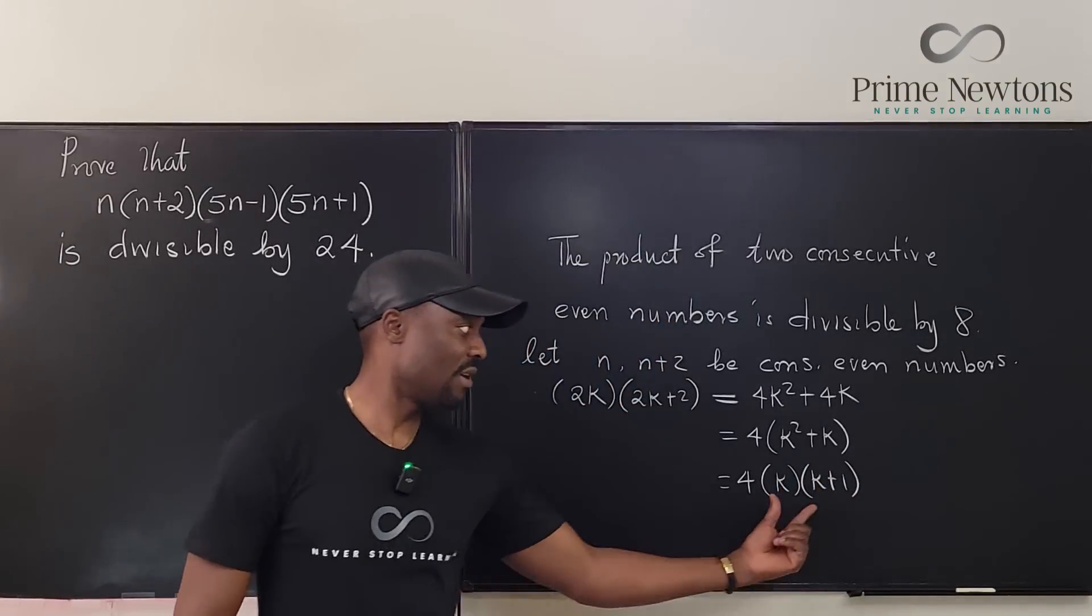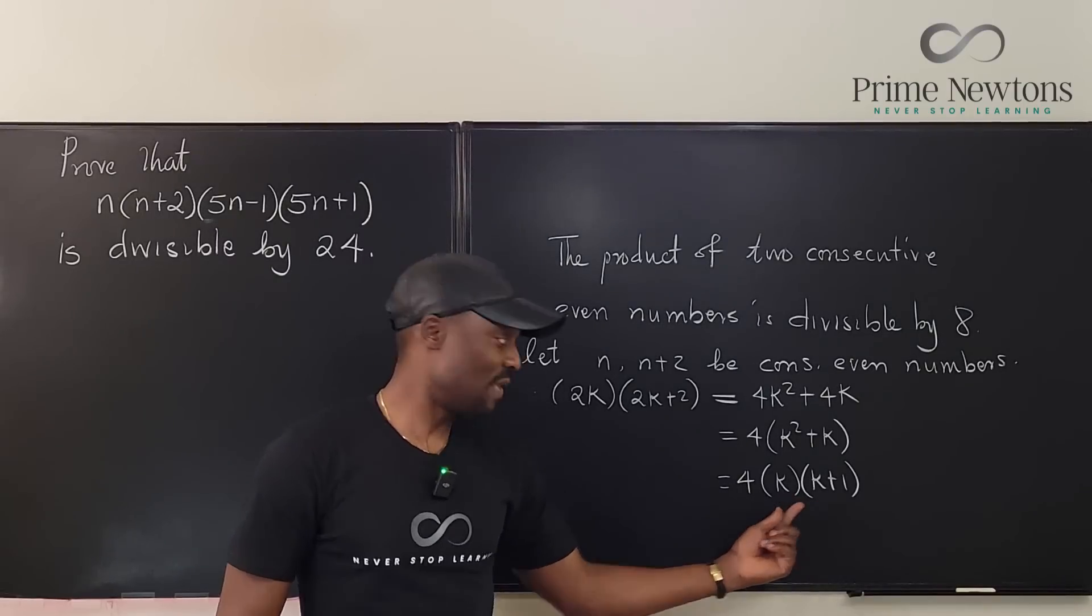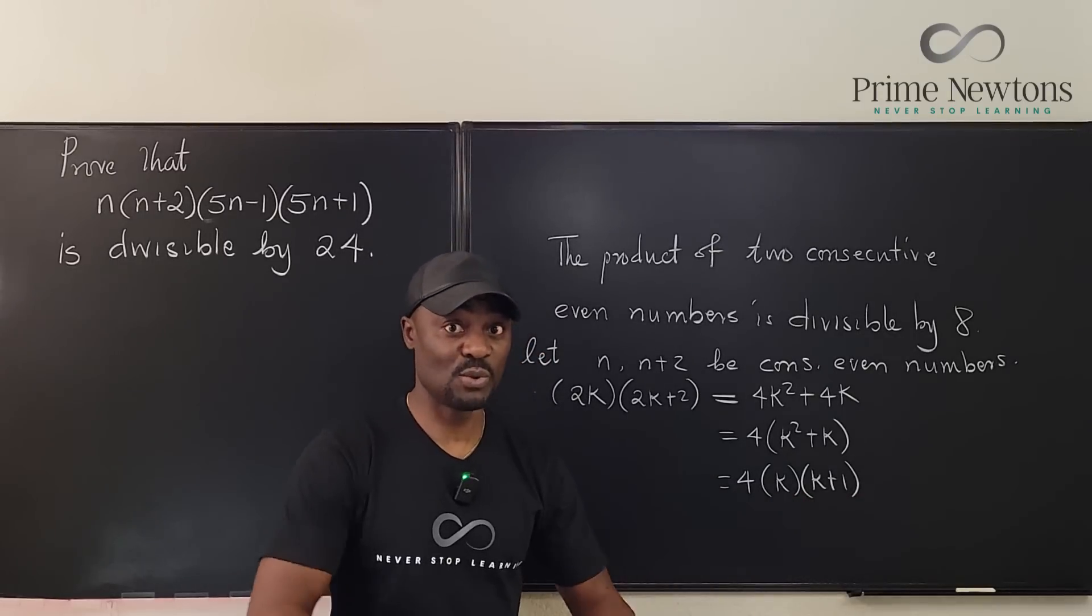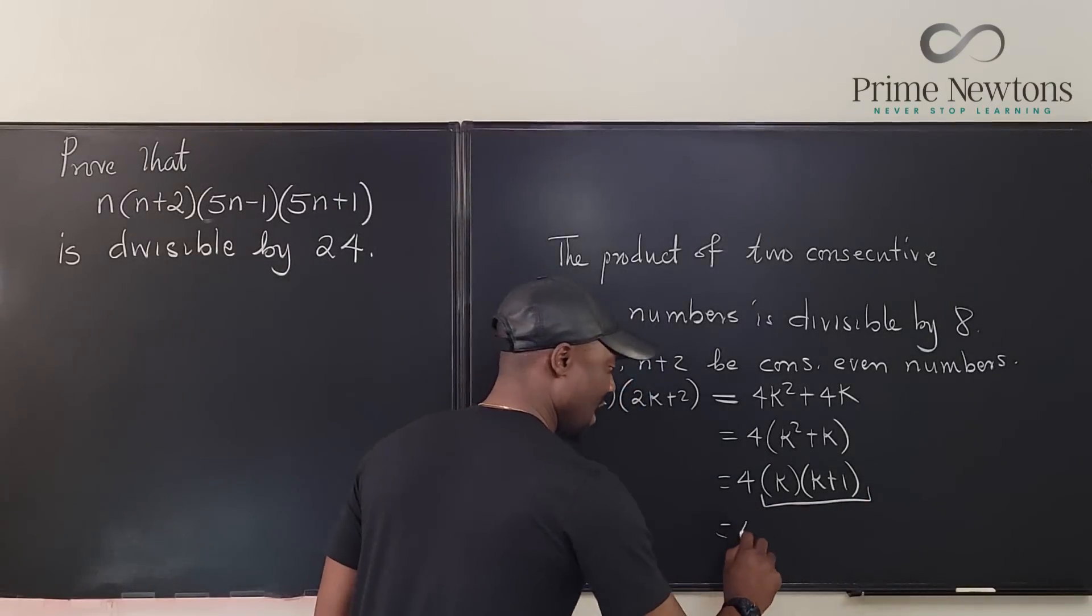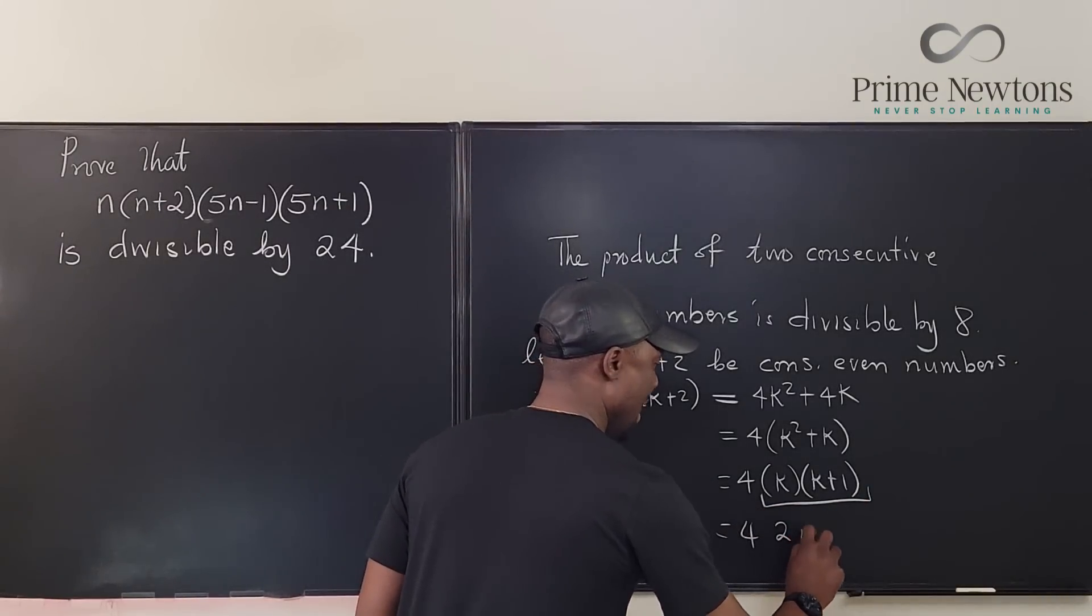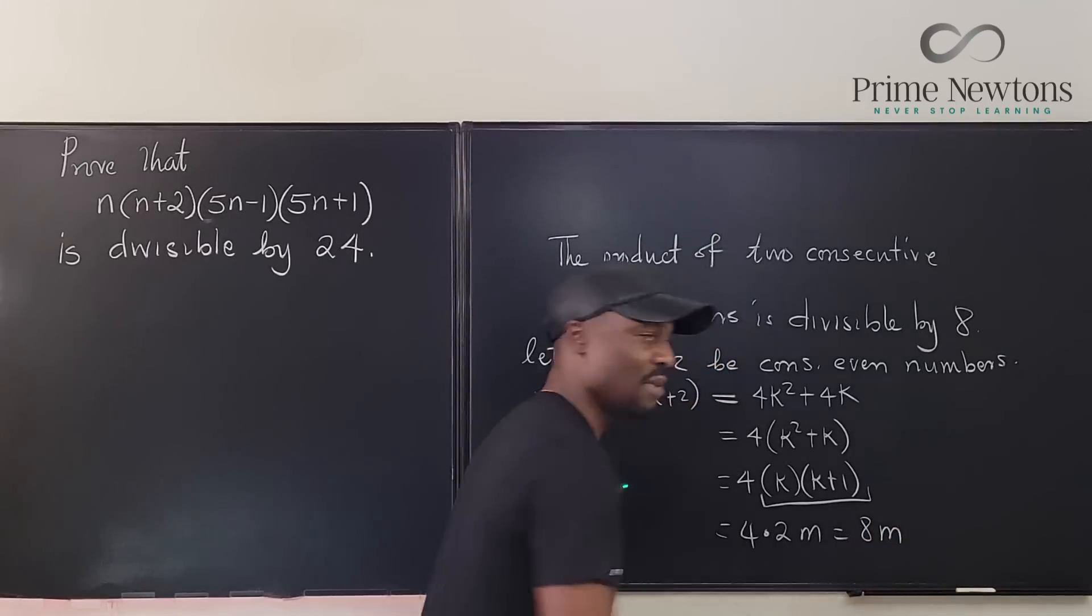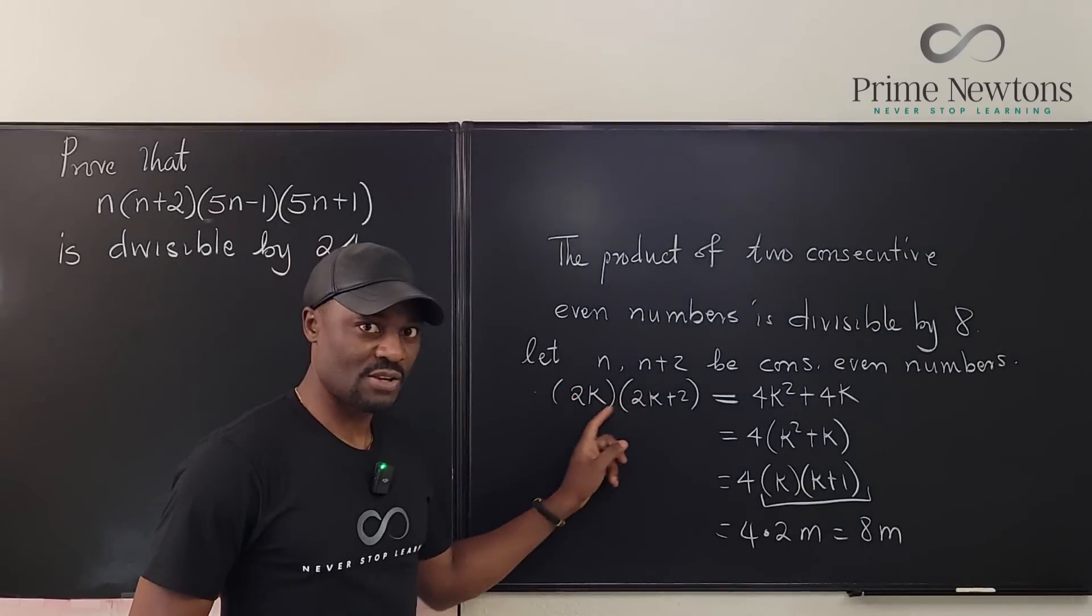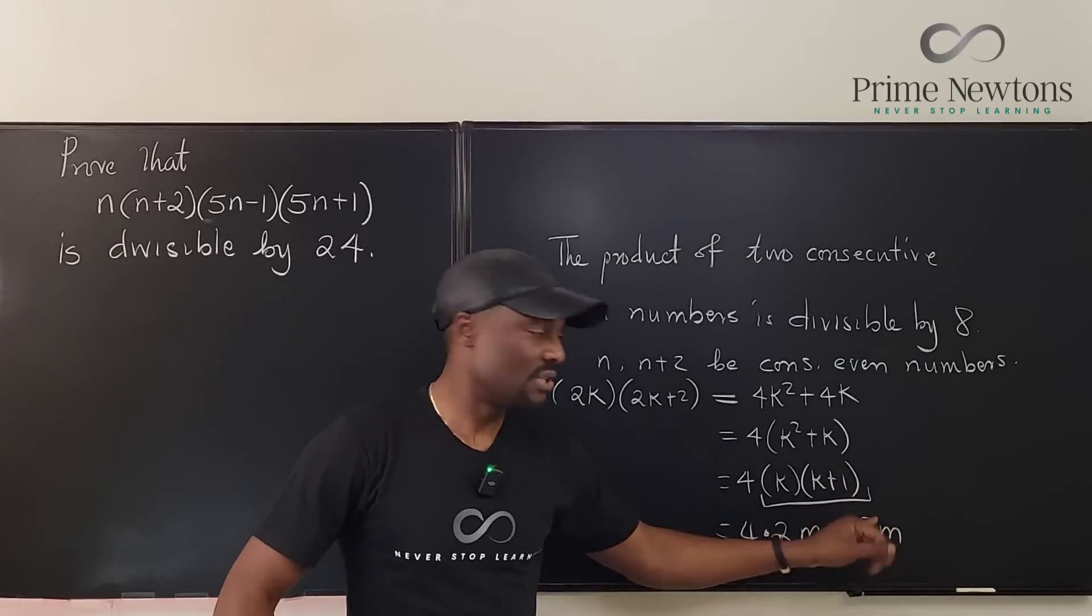Well the product of two consecutive numbers is always even, is always even. So there's an even, there's a 2 hiding here. Two consecutive numbers will always be even. So you can actually rewrite these two as 4 times 2m. Let's just say it is 2m. Well this gives you 8m. So you can see that the product of two consecutive even numbers is 8 times some integer m.